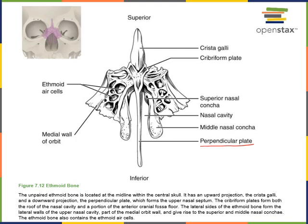There are scroll-shaped projections of bone called nasal conchae that function to increase the turbulence of air, giving it more time to become acclimated to humidity. These nasal conchae are scroll-shaped projections of bone that extend into the nasal cavity and are found on both the left and right sides.